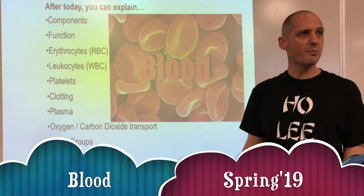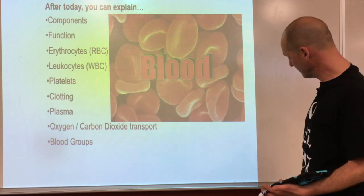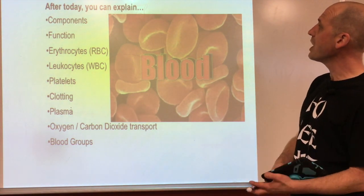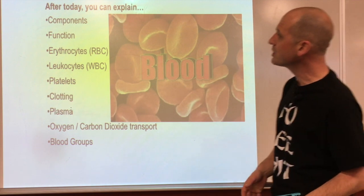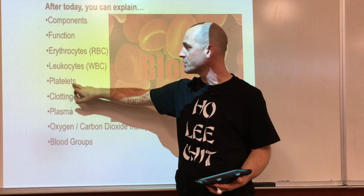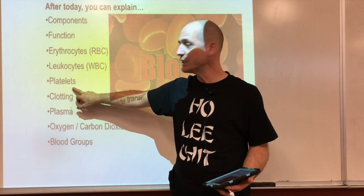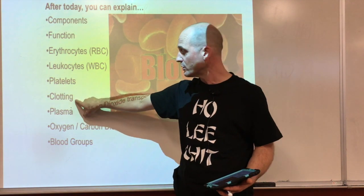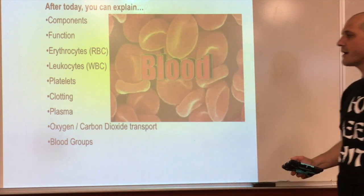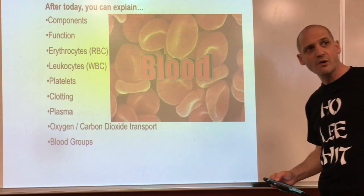When we look at blood, we look at the blood itself - we need a little bit of each component. We look at function, then we go through red blood cells, white blood cells, platelets, coagulation - that's clotting - then plasma, oxygen and carbon dioxide transport, and then blood groups to finish that off.